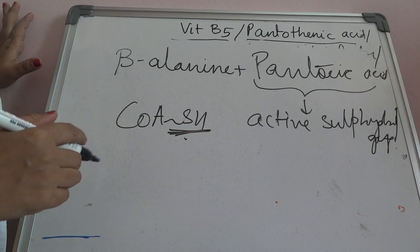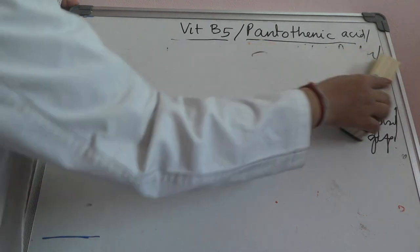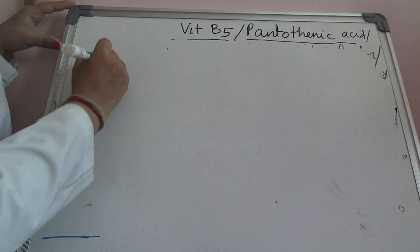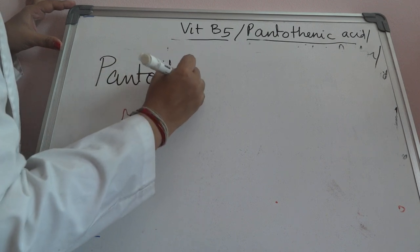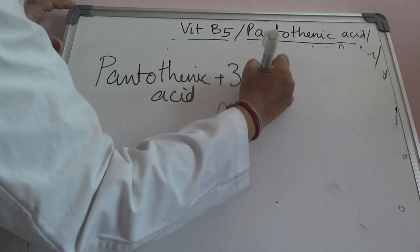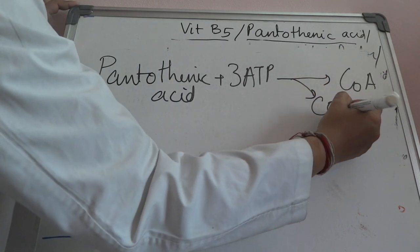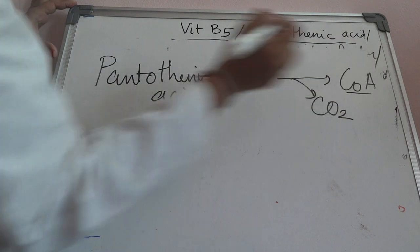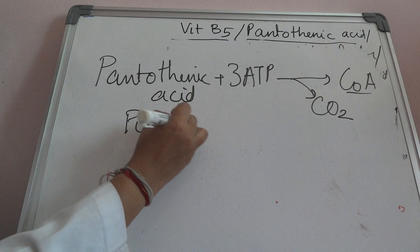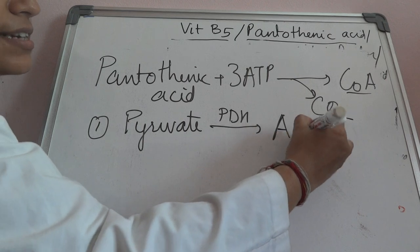There are various important coenzyme A molecules that take part in metabolic reactions. The formation of coenzyme A: pantothenic acid reacts with 3 ATP to form coenzyme A with the removal of carbon dioxide. One important reaction is pyruvate, in the presence of pyruvate dehydrogenase, leading to the formation of acetyl-CoA.